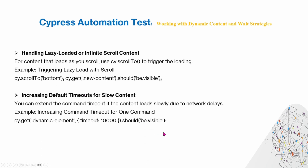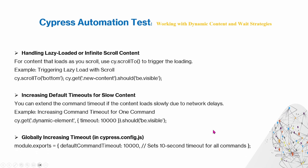You can also increase default timeouts for slow content. You can set the command timeout if the content loads slowly due to network delays. For example, to increase the timeout for one command you add a timeout of 10 seconds to that command. You can also globally increase timeouts by configuring your cypress.config file, setting the default command timeout to 10 seconds.